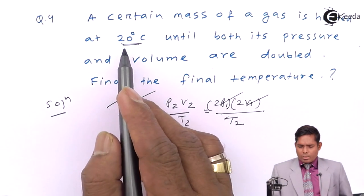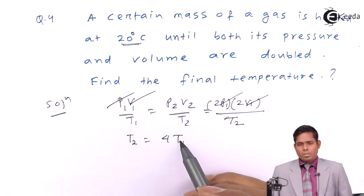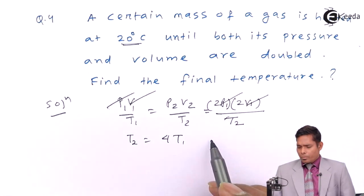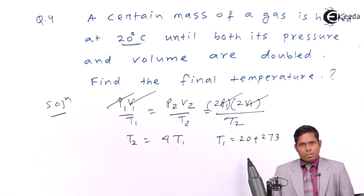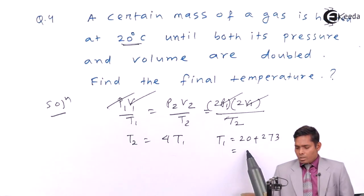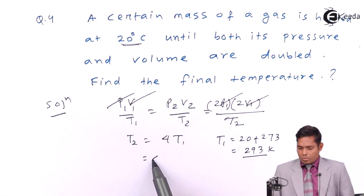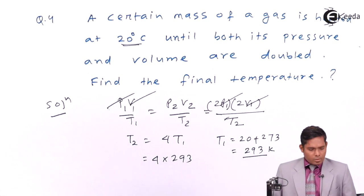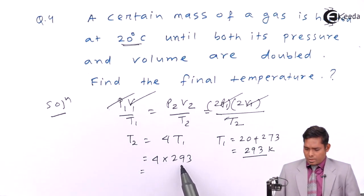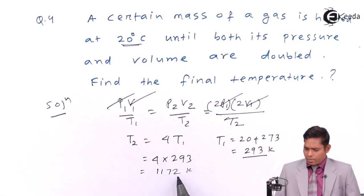4T1, but this T1 cannot be 20, because this T stands for Kelvin temperature. So you can write T1 as 20 plus 273, that is 293 Kelvin. So 4 into 293, the answer is 1172 Kelvin.